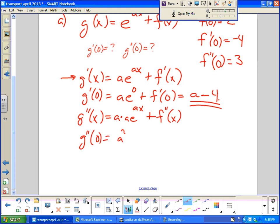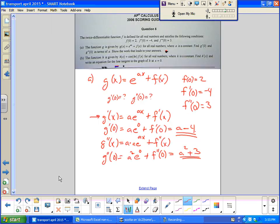a squared times e to the zero which is one, so it's a squared plus f prime prime of zero which is three. So I get a squared plus three. Alright. Four points, pretty easy problem.